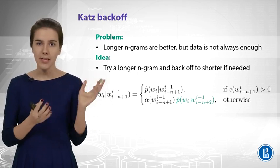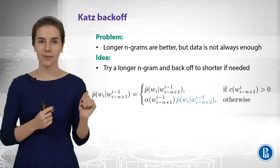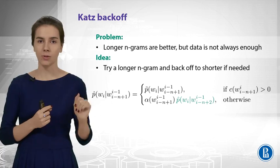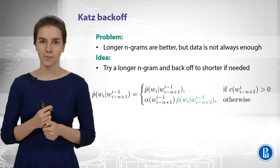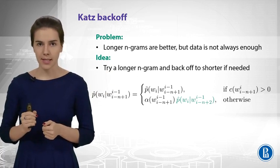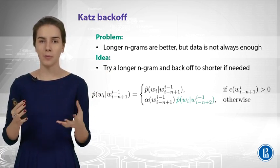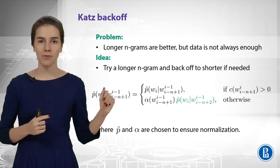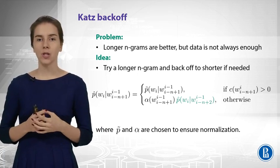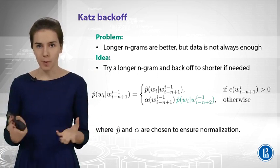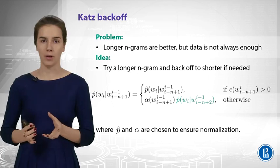The idea is simple, but I have a question for you. Why do we have some alphas there, and also a tilde near the p in the if-branch? The reason is that we still need to care about the probabilities. Those alpha constants are the discount that makes sure that the probability of all sequences will sum to 1 in our model.